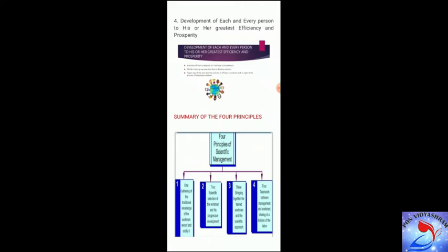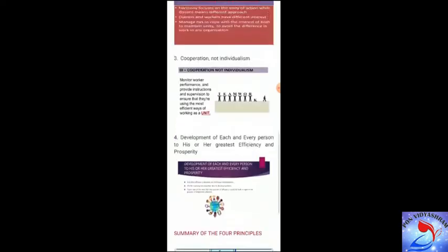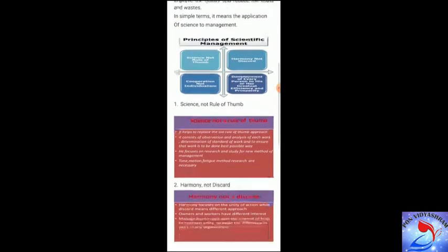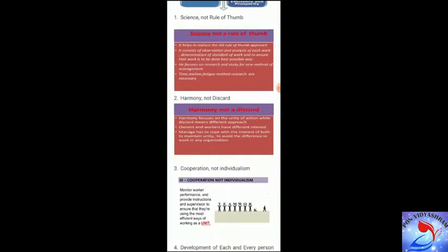We will have a summary of our four principles. Starting with the first principle, science, not rule of thumb: It helps replace the old rule of thumb approach. It consists of observation and analysis of each work, determination of standard of work, and ensuring that work is done in the best possible way. It focuses on research and study for new methods of management. Time, motion, and effective method research are necessary.